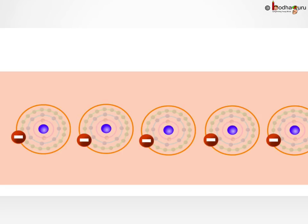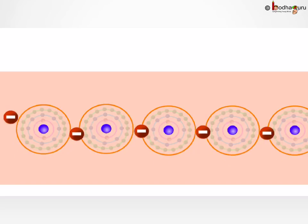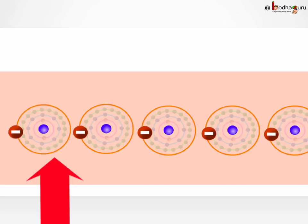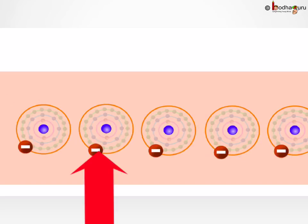So from the negative end of the battery, an electron enters the wire. Because negative forces repel each other, this new electron enters the outermost shell and pushes the electron from the outermost shell of this atom in the copper wire to the next atom in the wire. Now the next atom has an extra electron which pushes its outermost shell electron to the third atom in the wire.